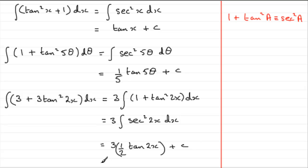We could tidy this up by just writing 3 over 2, and then tan 2x, plus the constant of integration.